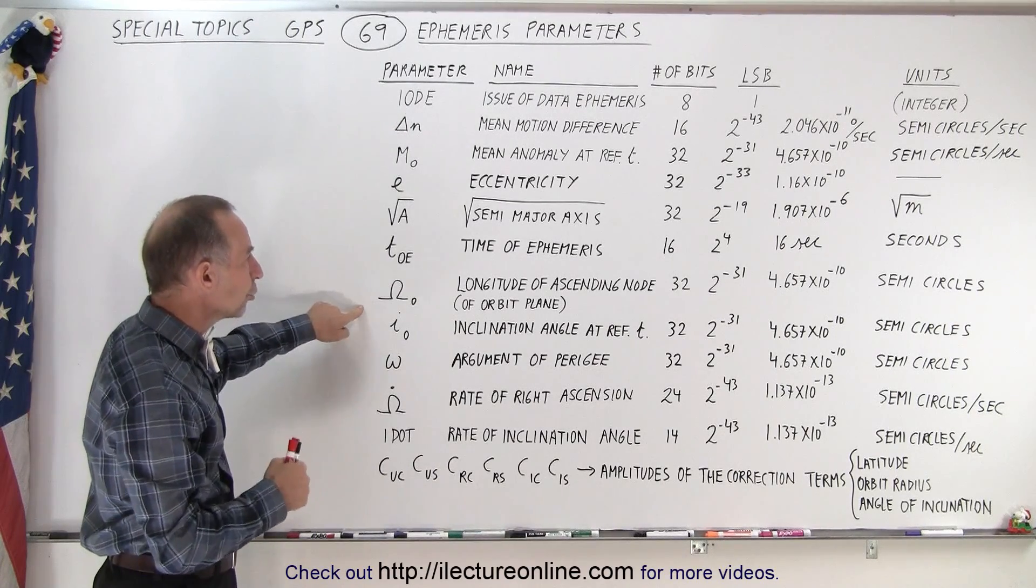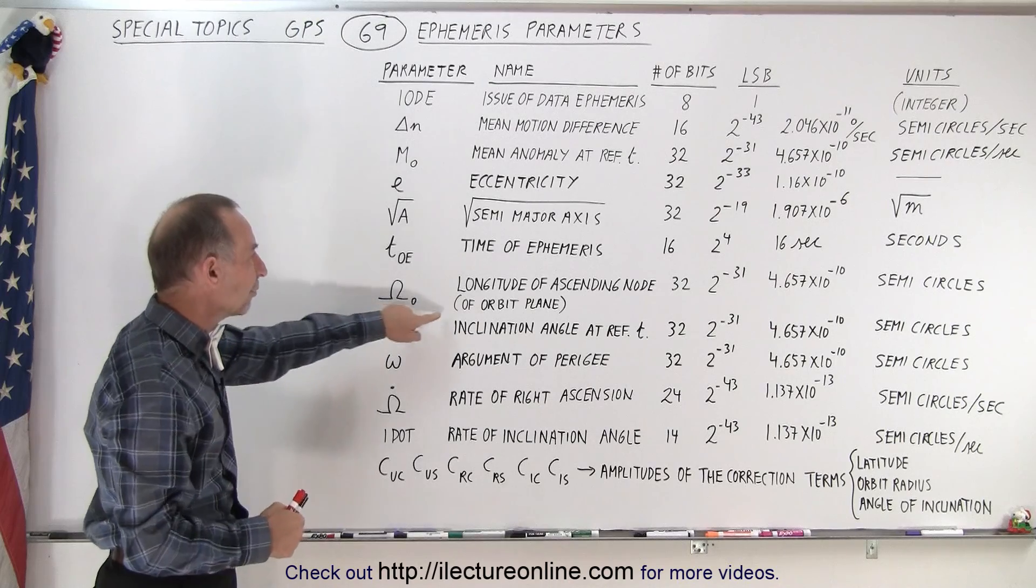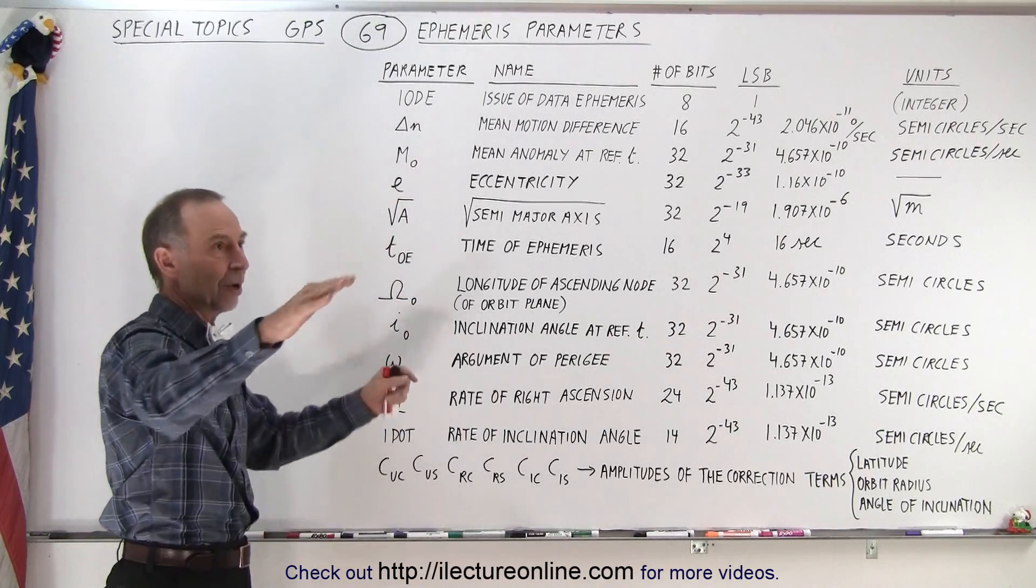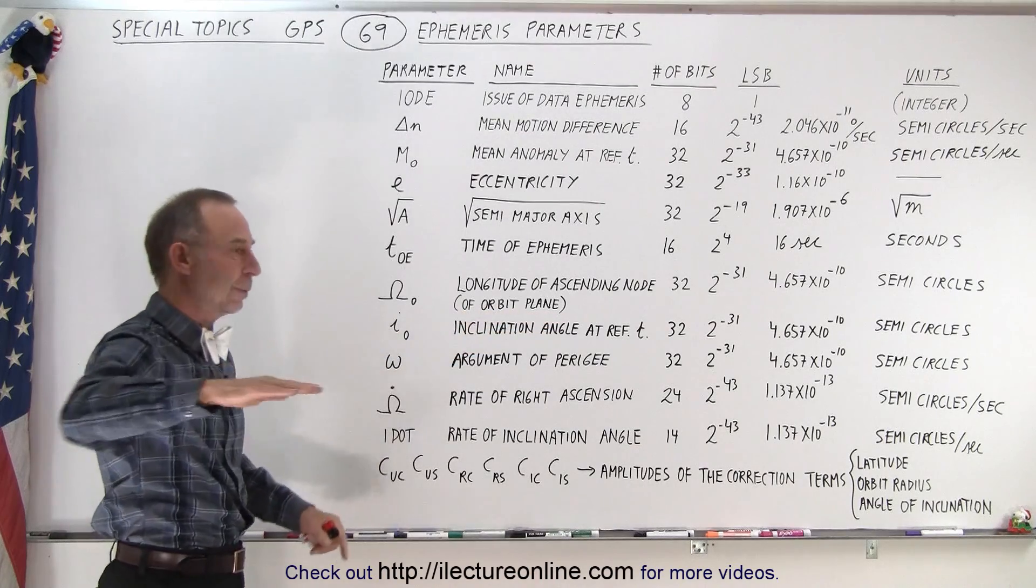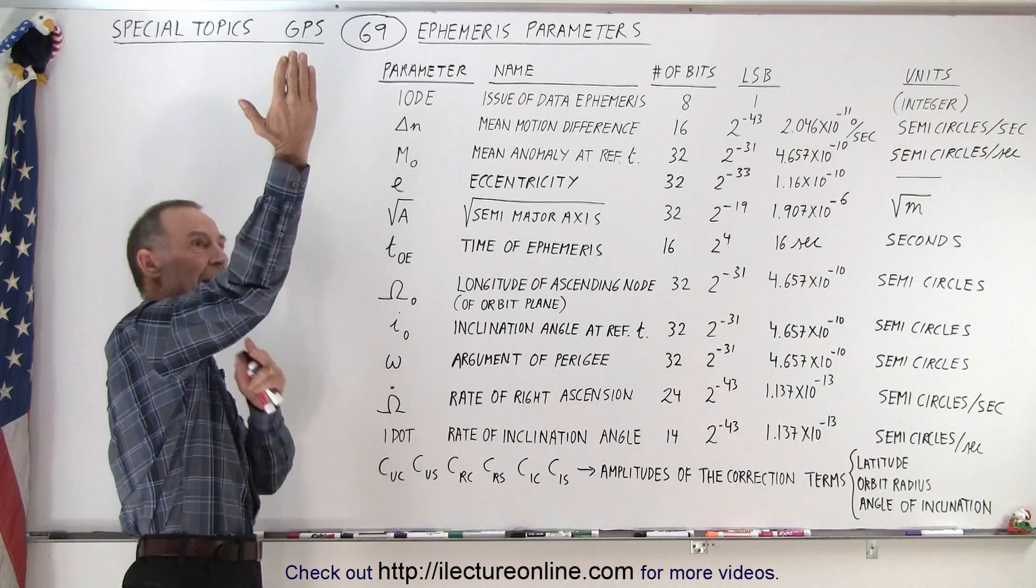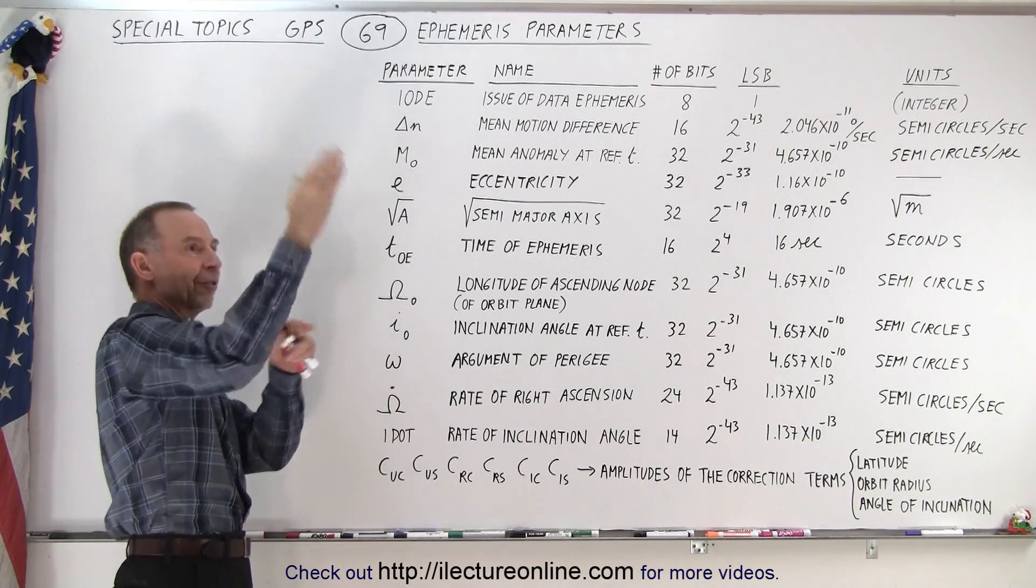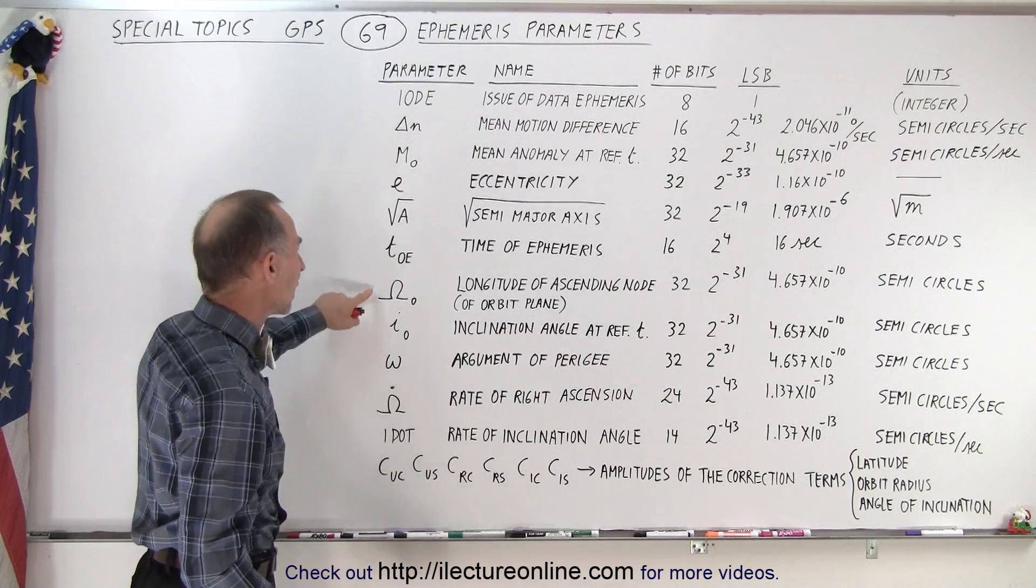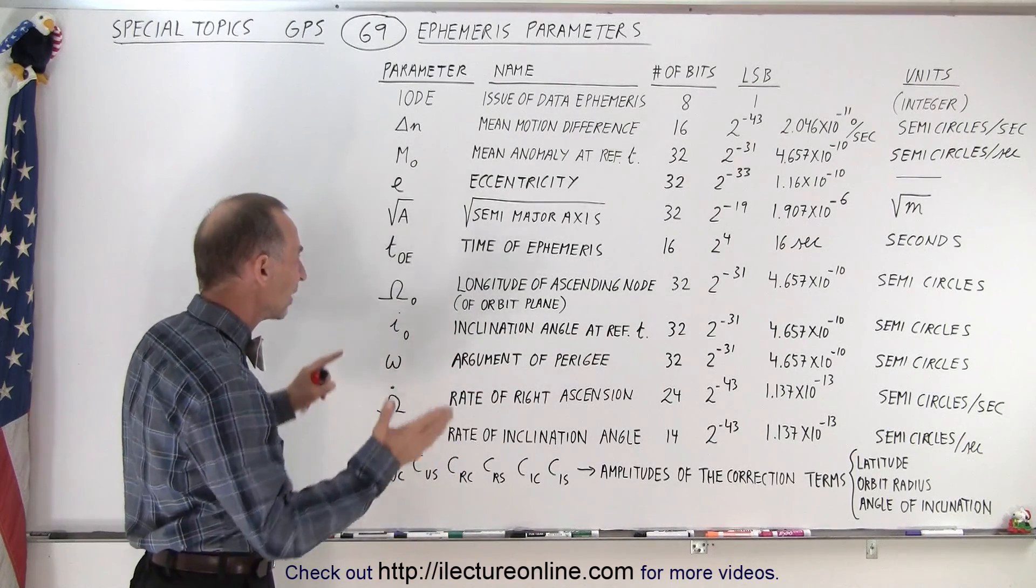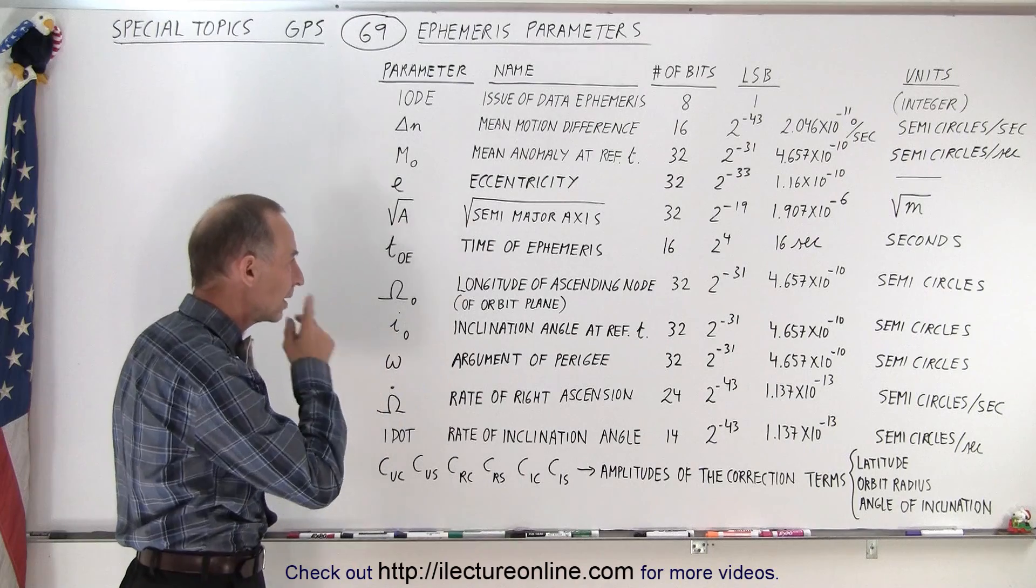The next variable is called the longitude of ascending node of the orbit plane. We have the equatorial plane, and then we have the orbit plane will be some angle reference to the equatorial plane. And we know that we can have a slight difference in that longitude of ascending node, as we call it.